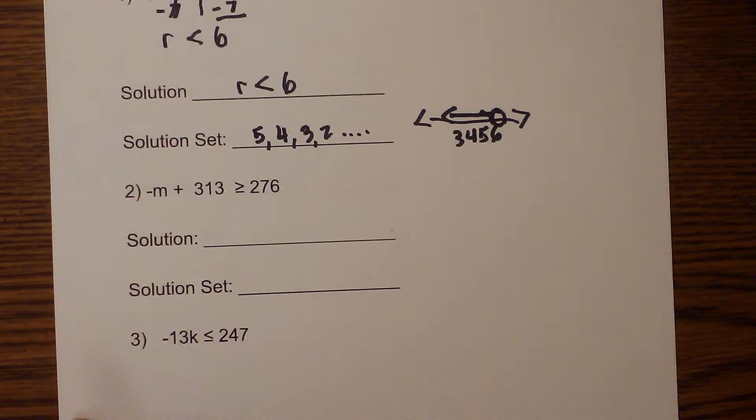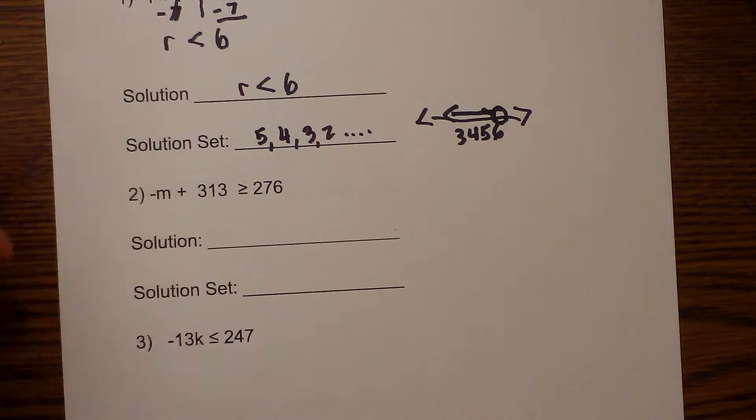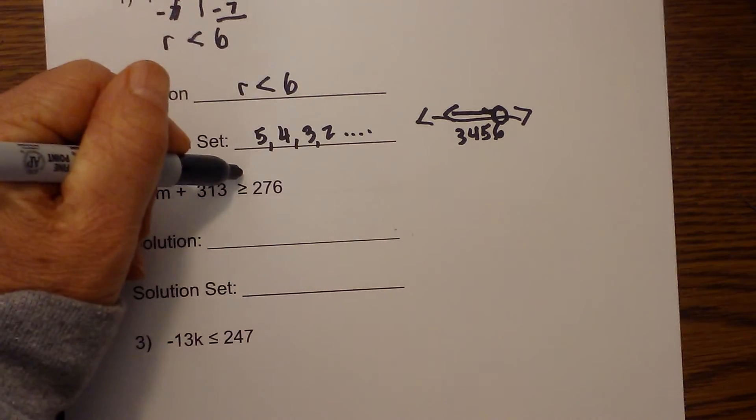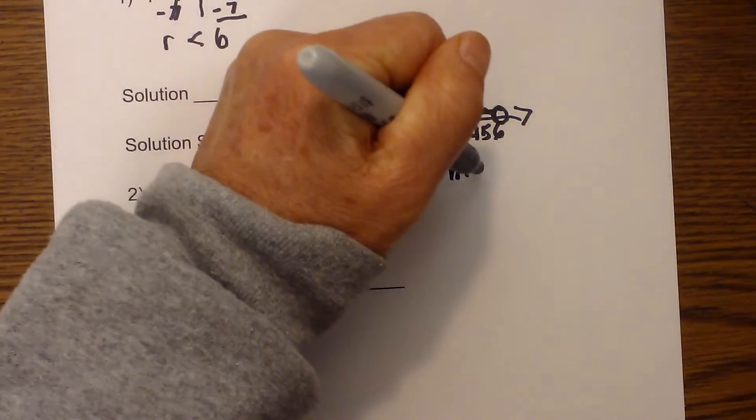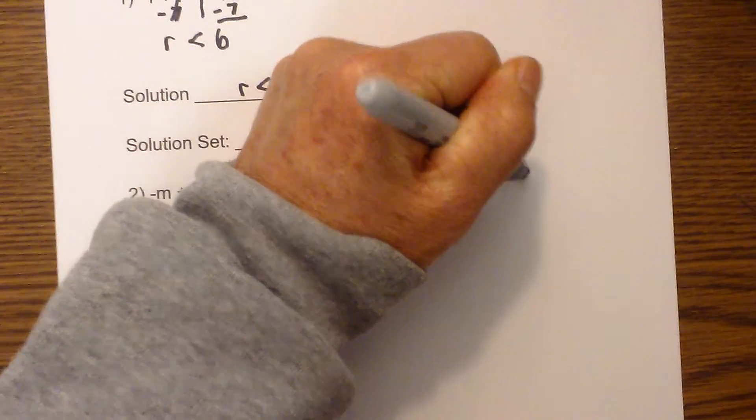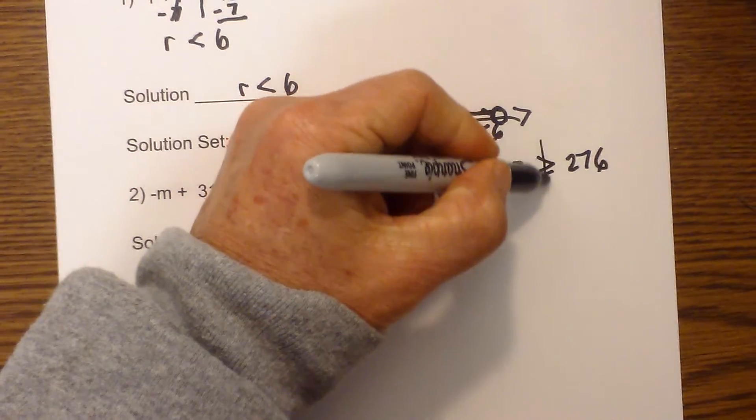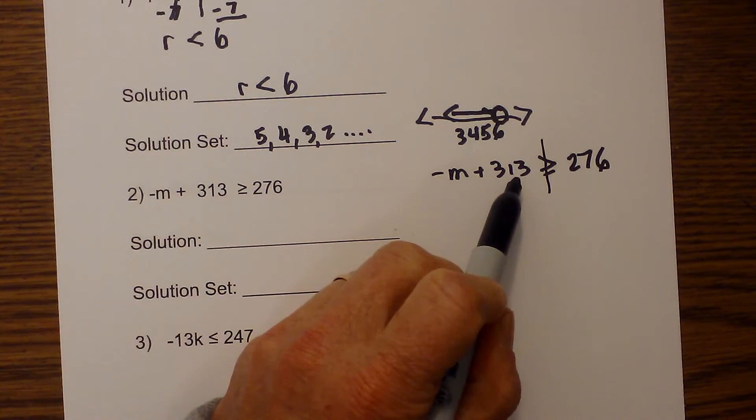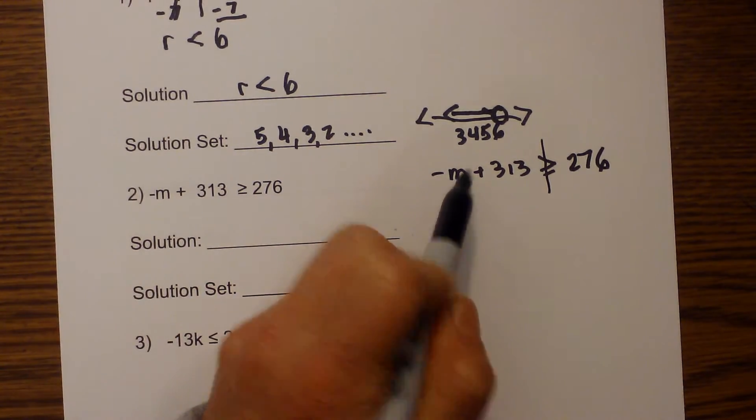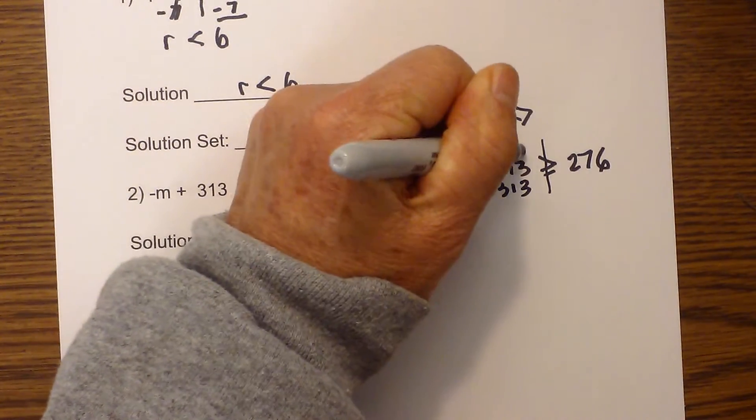Let's move quickly on to the next one. Now we have a negative number. We will draw a line down through here. I'm going to rewrite this, negative m plus 313 is greater than or equal to 276. I'll draw a line down through here. I need to get rid of the 313 to get the m isolated. So the inverse operation is subtraction, so these will cancel.